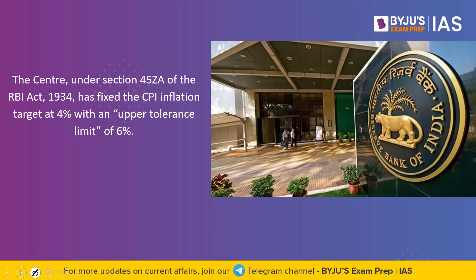The central government under Section 45ZA of the RBI Act has fixed the CPI inflation target at 4 percent with an upper tolerance limit of 6 percent. This means we have a flexible inflation targeting framework provided to the RBI. The RBI is expected to maintain retail inflation at 4 percent with plus or minus 2 percent — so the upper limit is about 6 percent and the lower limit is about 2 percent.